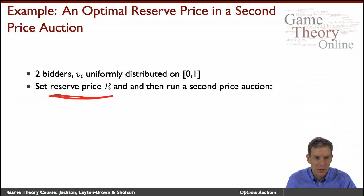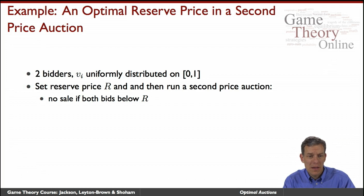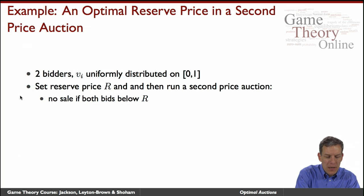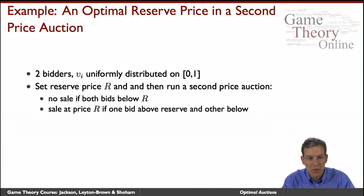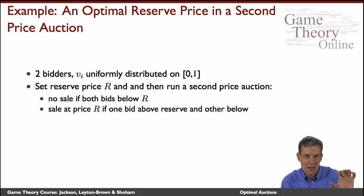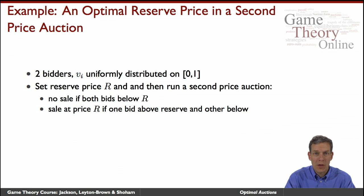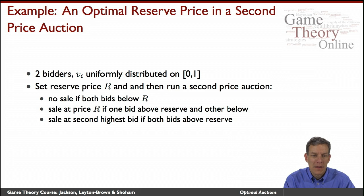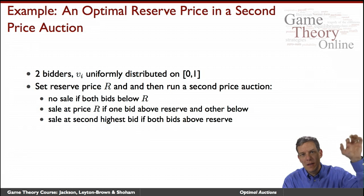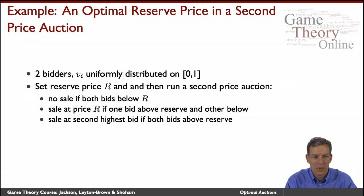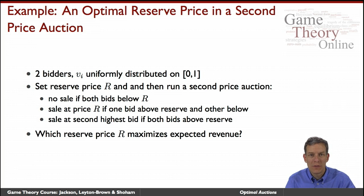Once we've put in a reserve price, if both bidders end up bidding below it, we get nothing — there's now a risk of no sale. If one bidder bids above the reserve and one below, the reserve price kicks in as the second-highest price, so we sell at the reserve. If both bidders bid above it, then it's just the second-highest bid that determines the price. So the question is: which reserve price maximizes expected revenue?